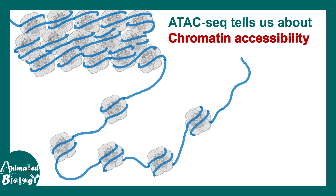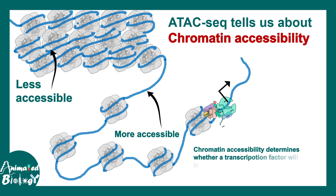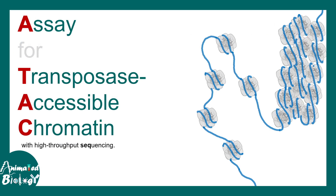ATAC-seq uses several enzymes to determine the accessibility of chromatin. Chromatin can be less accessible or more accessible, and accessibility of chromatin matters because transcription factors and polymerase need accessibility to start transcribing a gene. Hence, for overall transcription, accessibility of chromatin is a key factor.